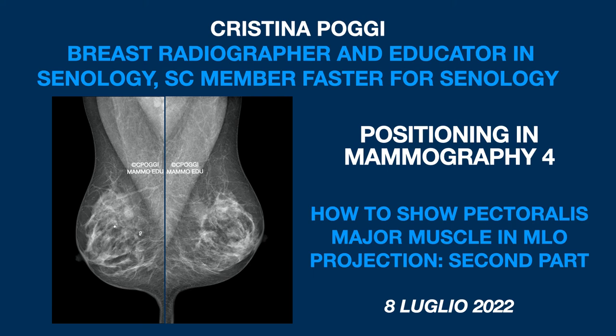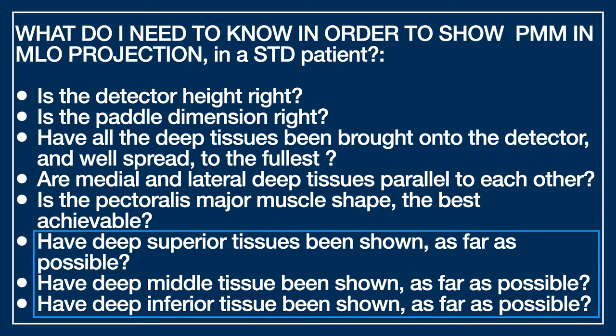Hi everyone. This is the second part of the lesson on how to show pectoralis major muscle on the MLO projection, the last of this series. These are the questions I'll try to answer today: have the superior depth tissues been shown on the image, as far as possible? And what about the middle depth tissues and the inferior ones? These are a few of the many questions we have to ask ourselves looking at the mammogram we've just produced.